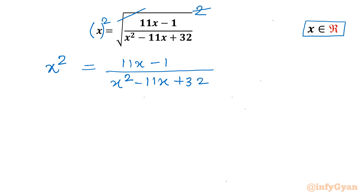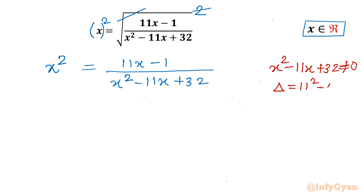We have to be sure the denominator cannot be zero. Considering x squared minus 11x plus 32 cannot equal zero — checking the discriminant: b squared is 11 squared minus 4 times 1 times 32, which is 121 minus 128 equals negative 7. A negative discriminant means no real solutions, so the denominator is never zero.